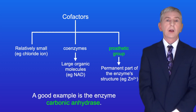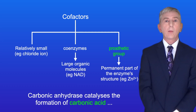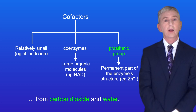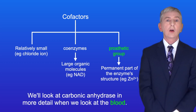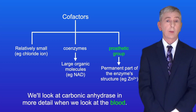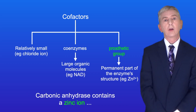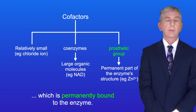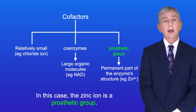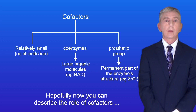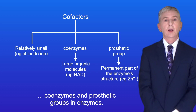A good example is the enzyme carbonic anhydrase. Carbonic anhydrase catalyzes the formation of carbonic acid from carbon dioxide and water, and we look at carbonic anhydrase in more detail when we look at the blood. Carbonic anhydrase contains a zinc ion which is permanently bound to the enzyme, so in this case the zinc ion is a prosthetic group. Hopefully now you can describe the role of cofactors, coenzymes and prosthetic groups in enzymes.